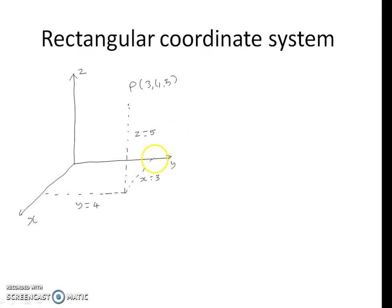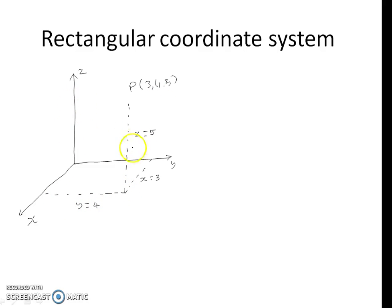X equal to 3 means it is the distance of the point P from the Y-Z plane. Y equal to 4 means it is the distance of the point P from the Z-X plane. And Z equal to 5 means it is the distance of the point P from the X-Y plane.